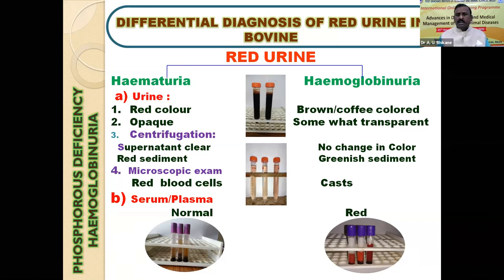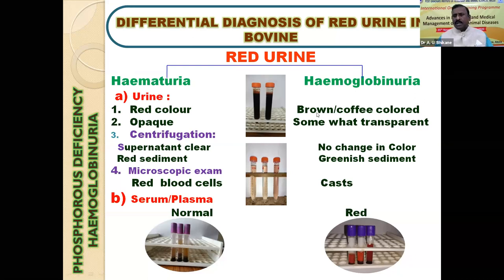Number one is hematuria and number two is hemoglobinuria. When blood is present in the urine, that is hematuria. When hemoglobin is present in the urine, we call it hemoglobinuria. How to distinguish between hematuria and hemoglobinuria is the first statement we hope to address whenever we are undertaking diagnosis.